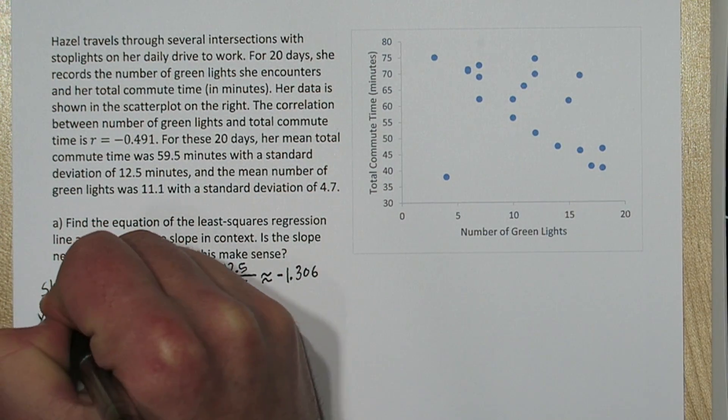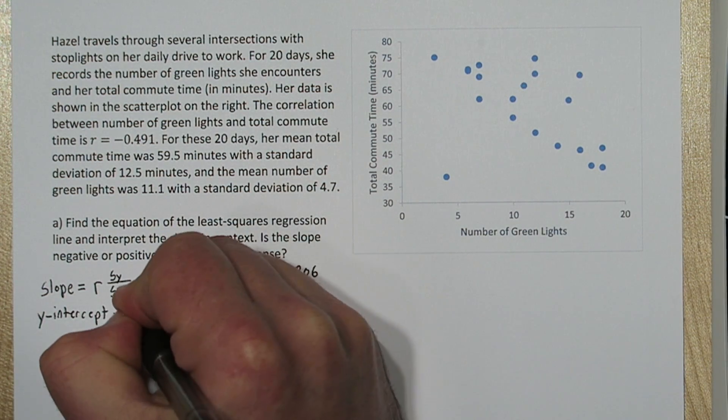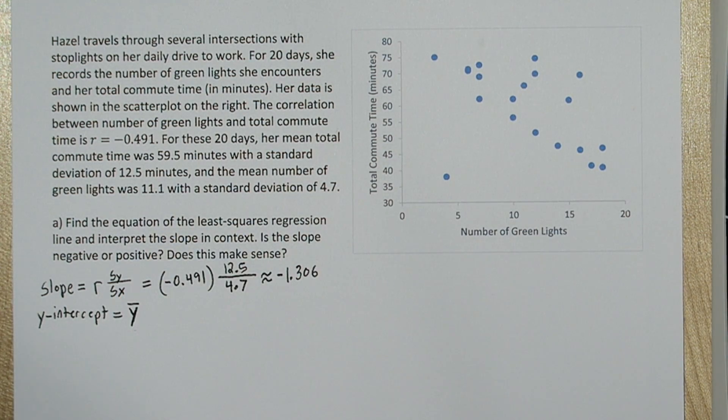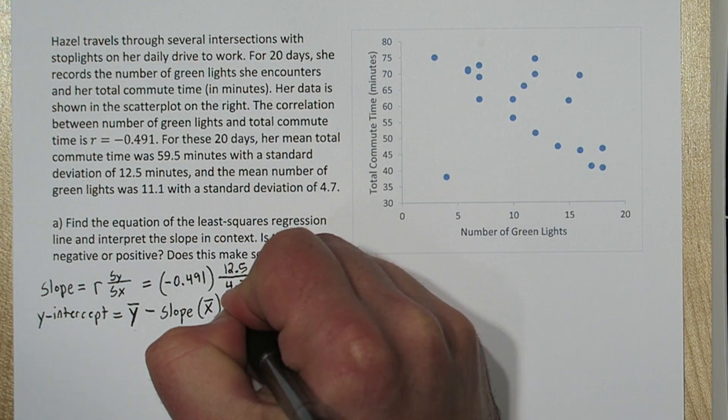The other formula we're going to use is for the y-intercept. It says if you take the sample mean of your response variable, and you subtract the product of the slope and the sample mean of the explanatory variable, that will be your y-intercept.